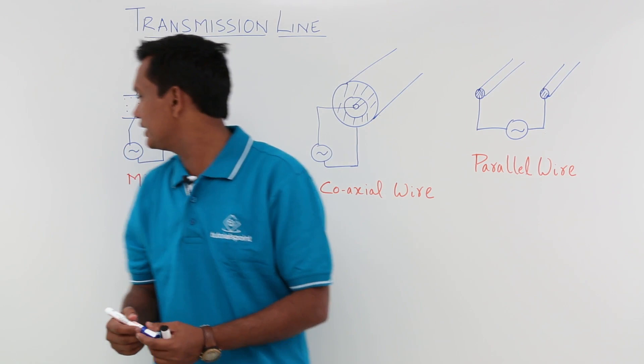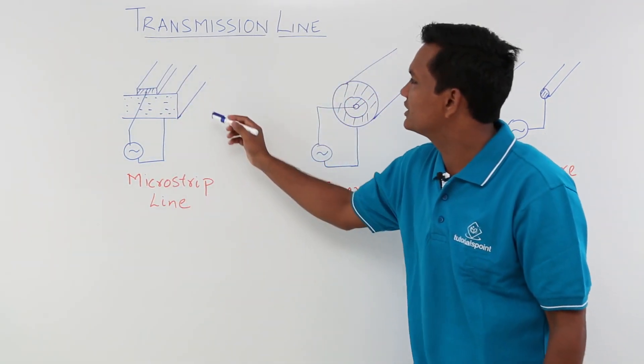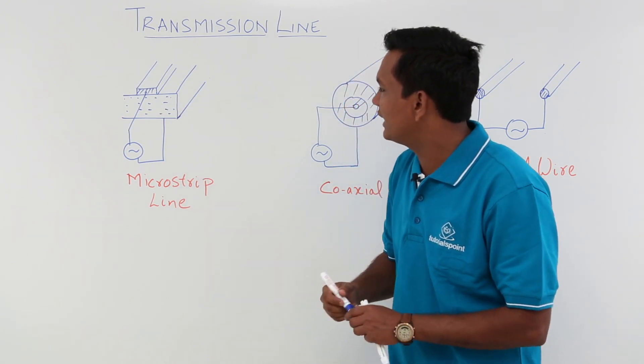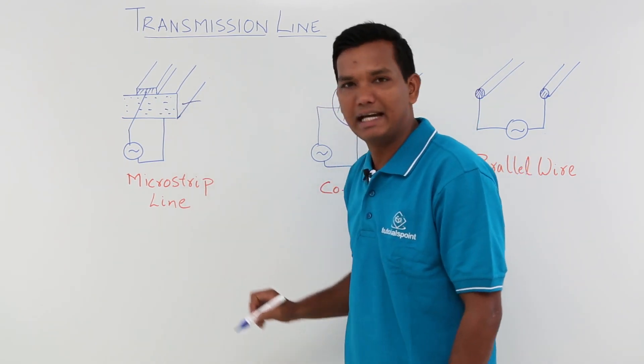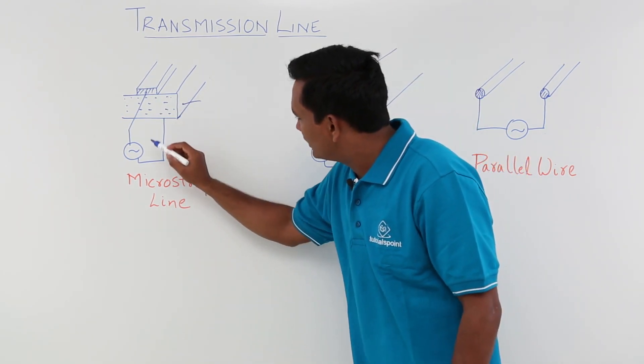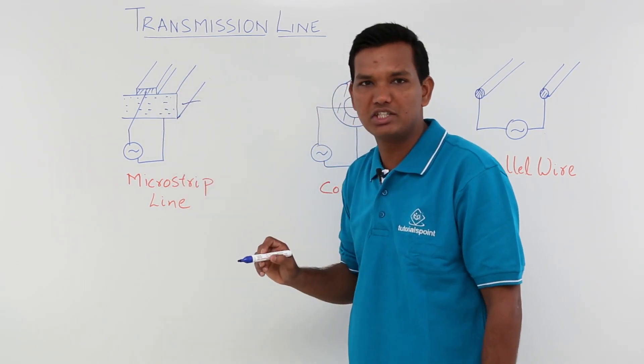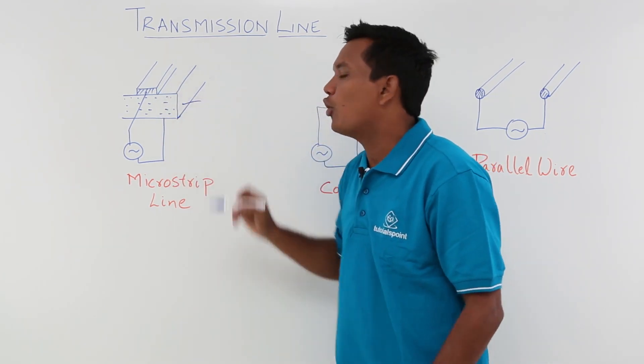We have another type: microstrip line, which is nothing but another transmission line. What happens is, you can see that this is a dielectric. This is a metal wire. This is a dielectric. When we supply a voltage there, the power will be transferred over this.